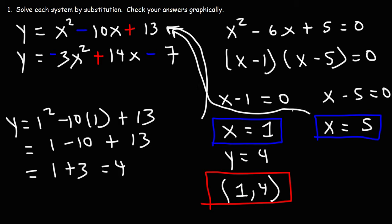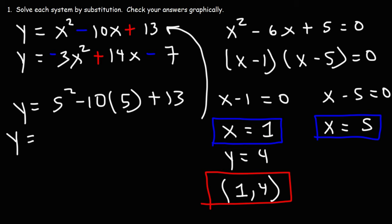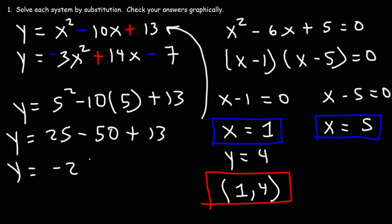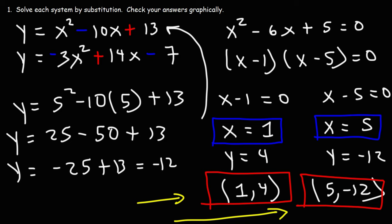For the second x value, plugging x equals 5 into the first equation: y equals 5 squared minus 10 times 5 plus 13. That's 25 minus 50 plus 13. 25 minus 50 is negative 25, and negative 25 plus 13 is negative 12. So we get the ordered pair (5, −12). Our two solutions are (1, 4) and (5, −12).